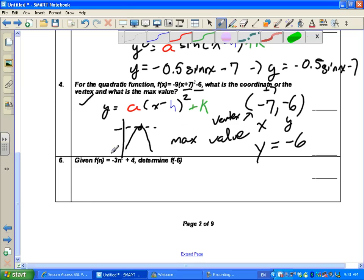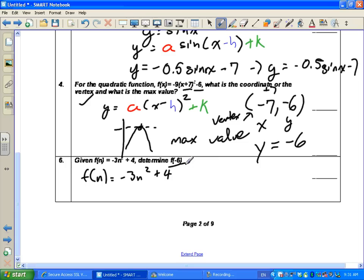Okay, so question 6. Given f at n is negative 3n squared plus 4, I'm going to rewrite that: negative 3n squared plus 4. They want us to find f at negative 6. So when I rewrite this, I write f at negative 6 is equal to, and I replace my n with the value of negative 6. According to BEDMAS, we do the exponent first. So negative 6 times negative 6. Anyone know? 36.